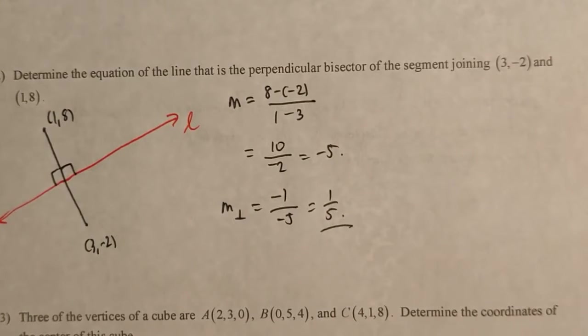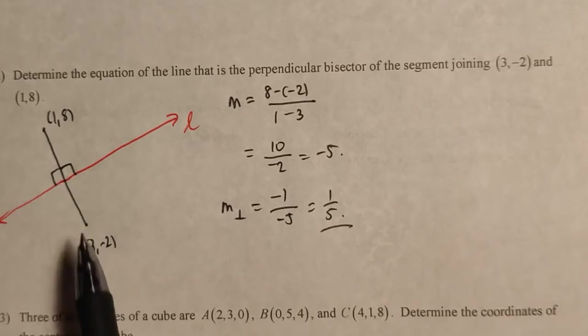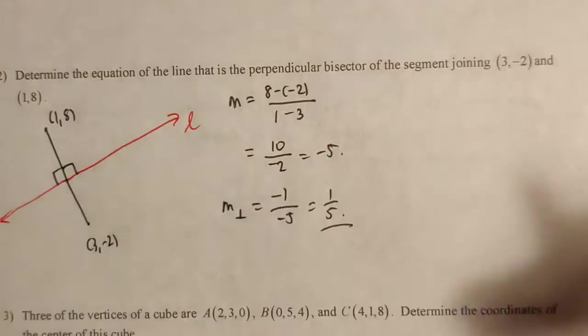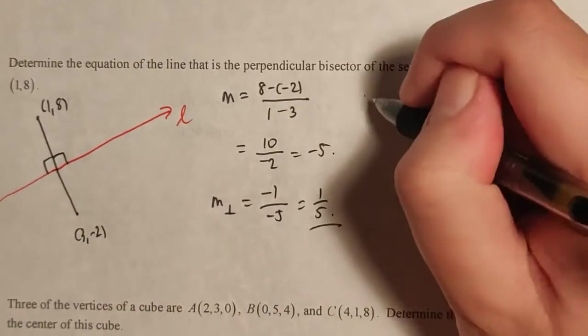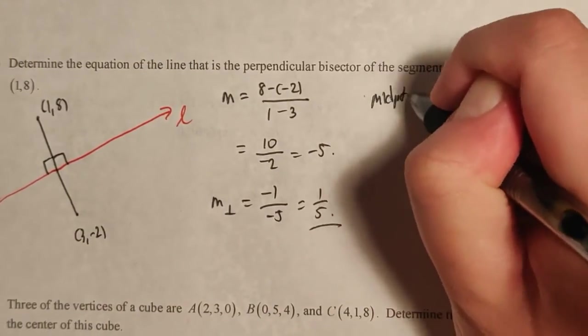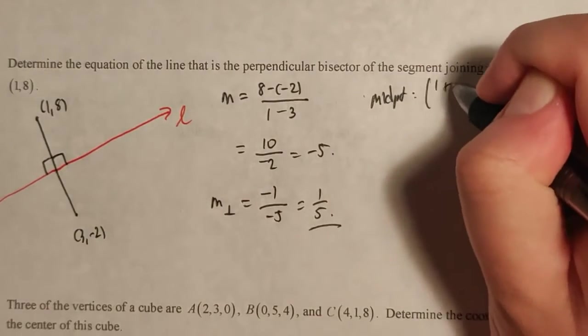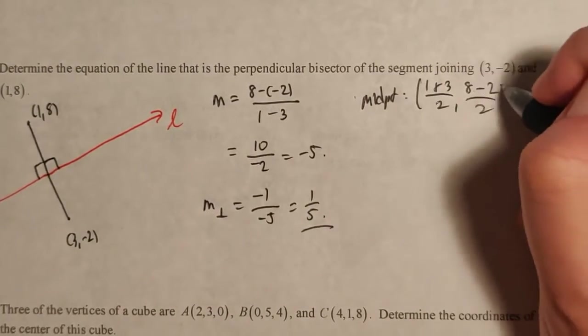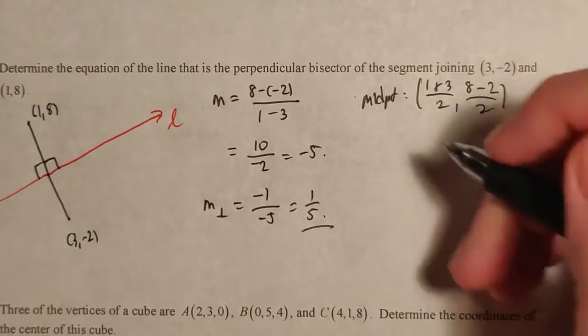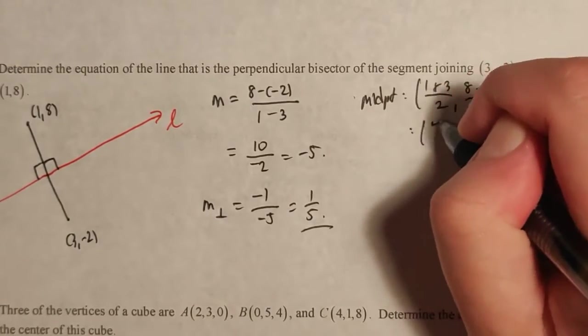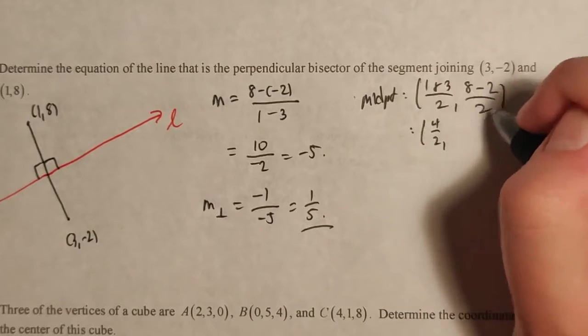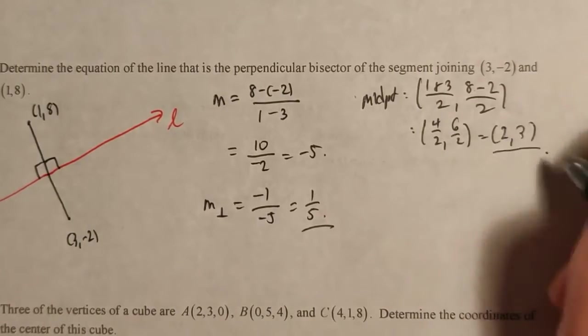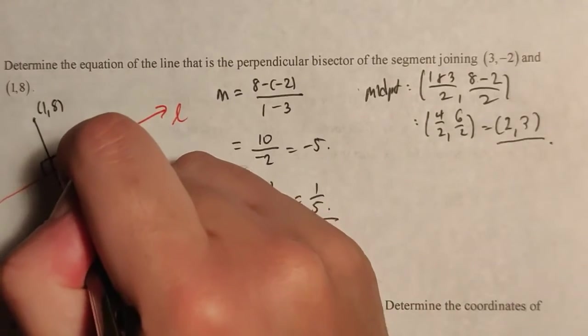So not only is this line perpendicular, we also know that it runs through the midpoint here because it has to be a bisector. So we have to figure out what the midpoint is. The midpoint is 1 plus 3 over 2, and then 8 minus 2 over 2. We're just taking the average of the coordinates. That's 4 over 2 and 6 over 2, which is the point 2 comma 3. So this point here is 2, 3.